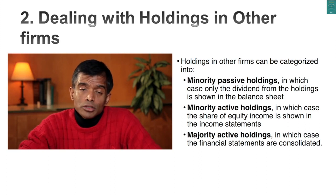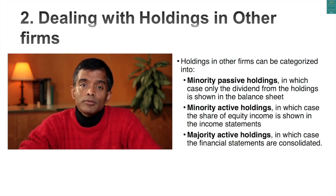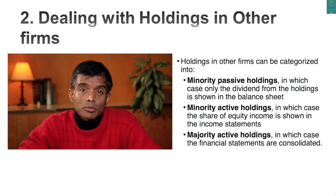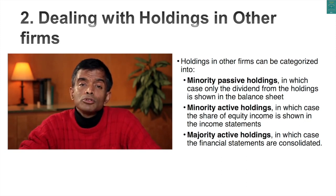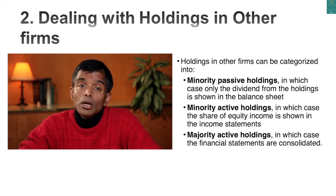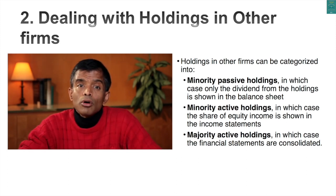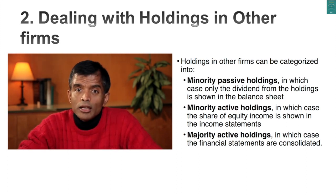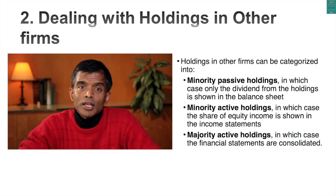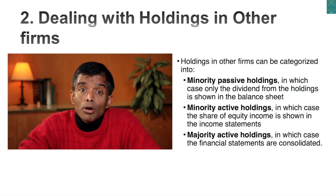Here's the second step up the ladder. If you own five, ten, or fifteen percent of a company and take some role in how the company is run, you have to use what's called the equity approach. Under the equity approach, in your income statement you have to show 15 to 20 percent of the net income or net loss of that company, but below the operating income line.